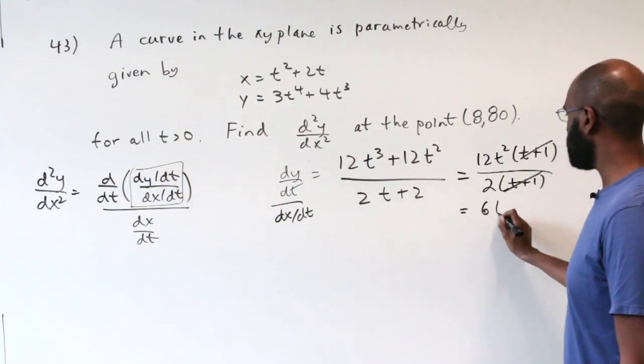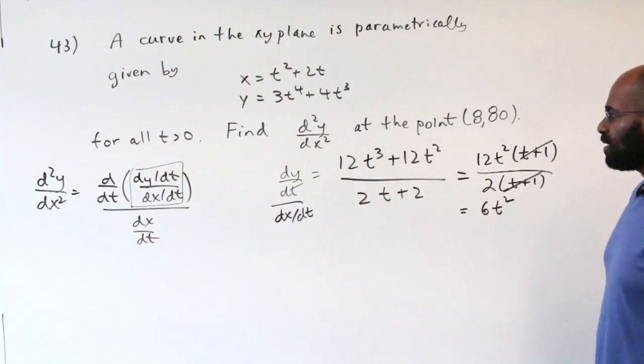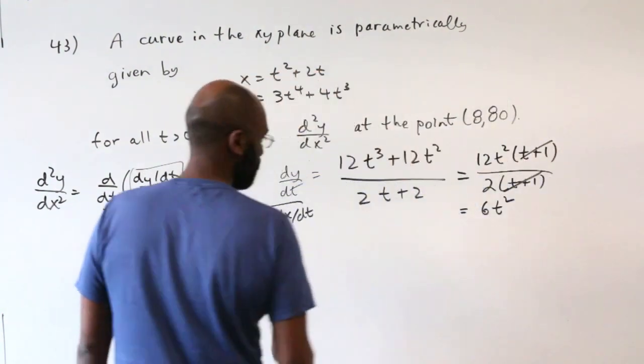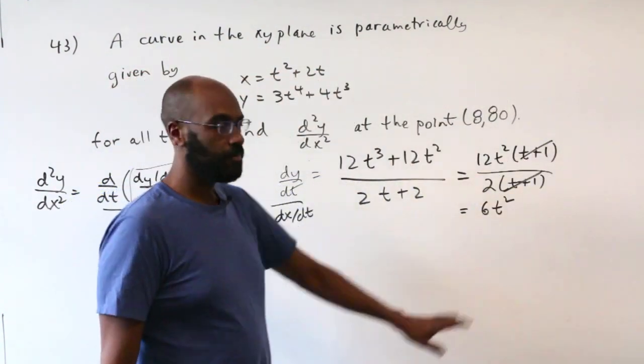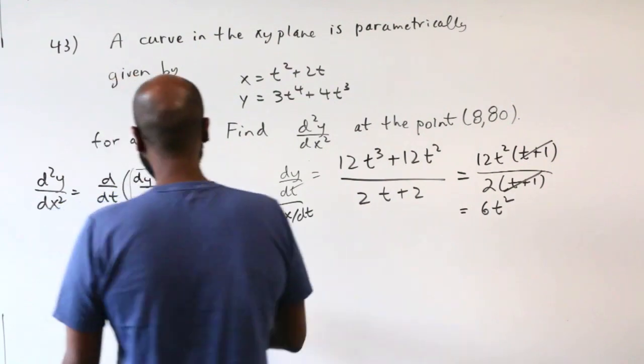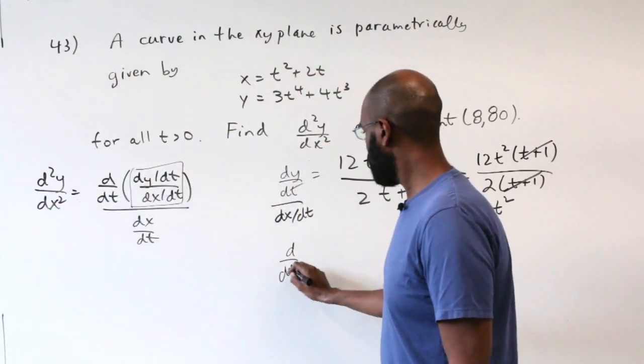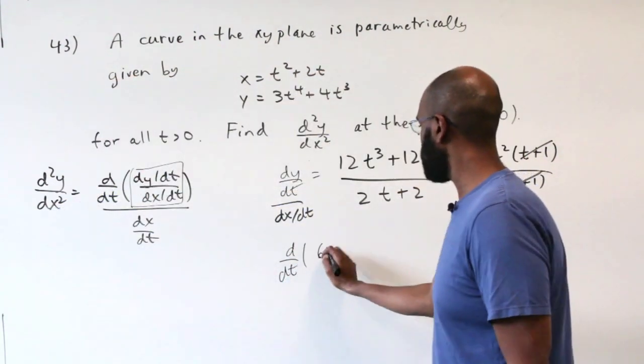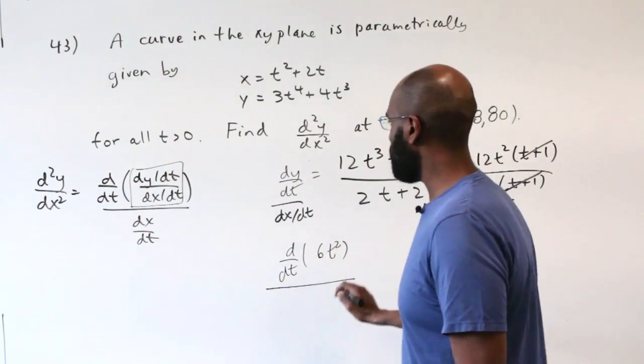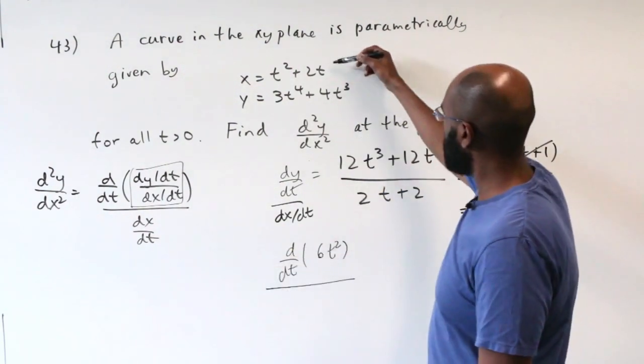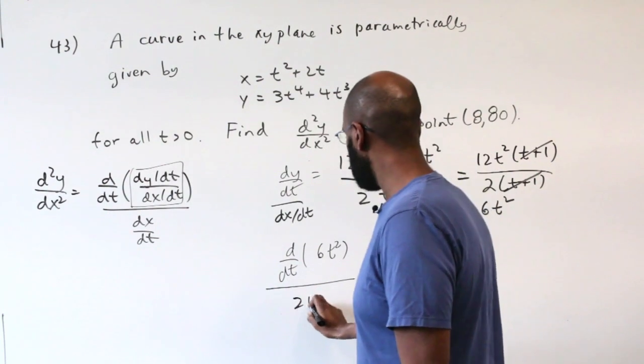Okay, so our second derivative is d/dt of this quantity right here, divided by dx/dt. And dx/dt, again, is 2t + 2. So this gives us 12t all over 2t + 2. Alright, so this is the derivative that we're interested in, it's 12t all over 2t + 2.